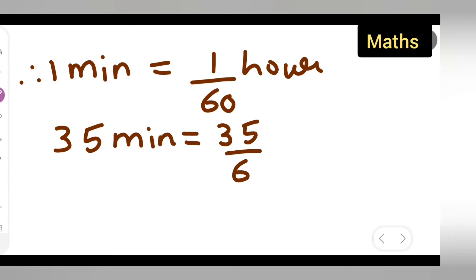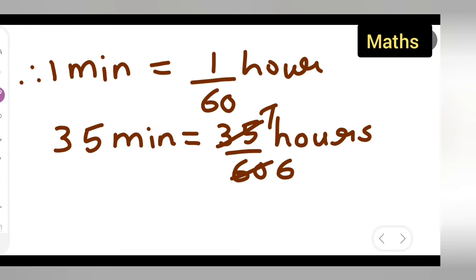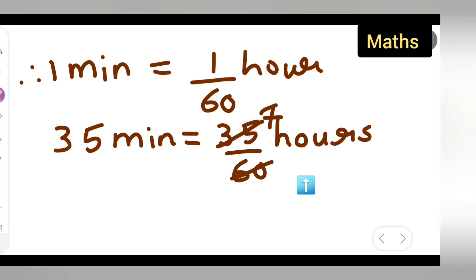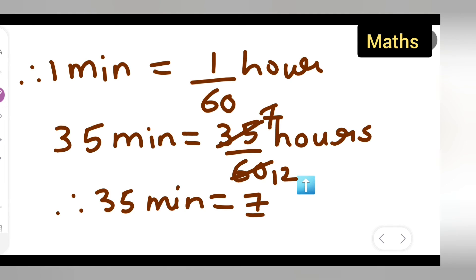Now we can simplify 35 upon 60. Five sevens are 35, and five twelves are 60. So we cancel these terms: 35 upon 60 simplifies to 7 upon 12. Therefore, 35 minutes is equal to 7 upon 12 hours.